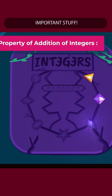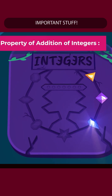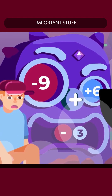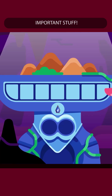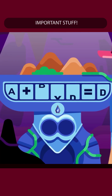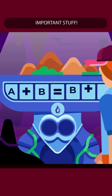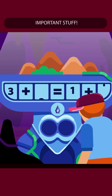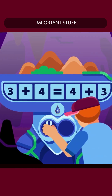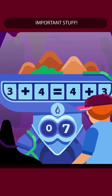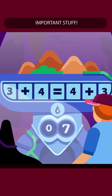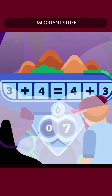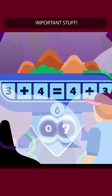Number 3: Commutative property of addition of integers. This property states that the sum of two integers remains unchanged if we interchange their places: a plus b equals b plus a. For example, 3 plus 4 equals 4 plus 3, which equals 7. You can see in the examples that changing places has no effect on the result, hence justifying the commutative property.